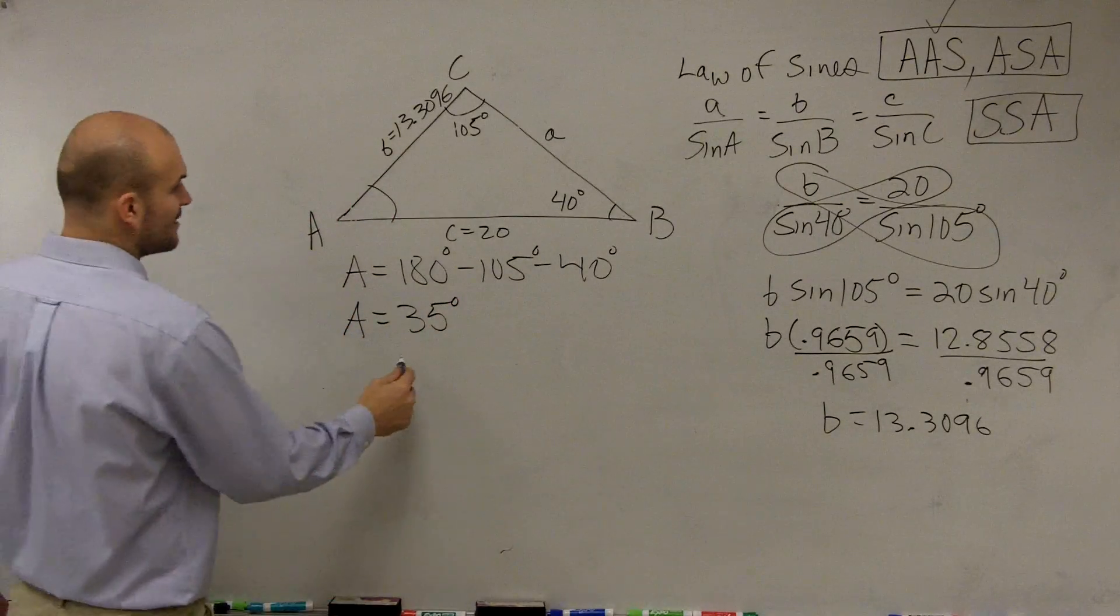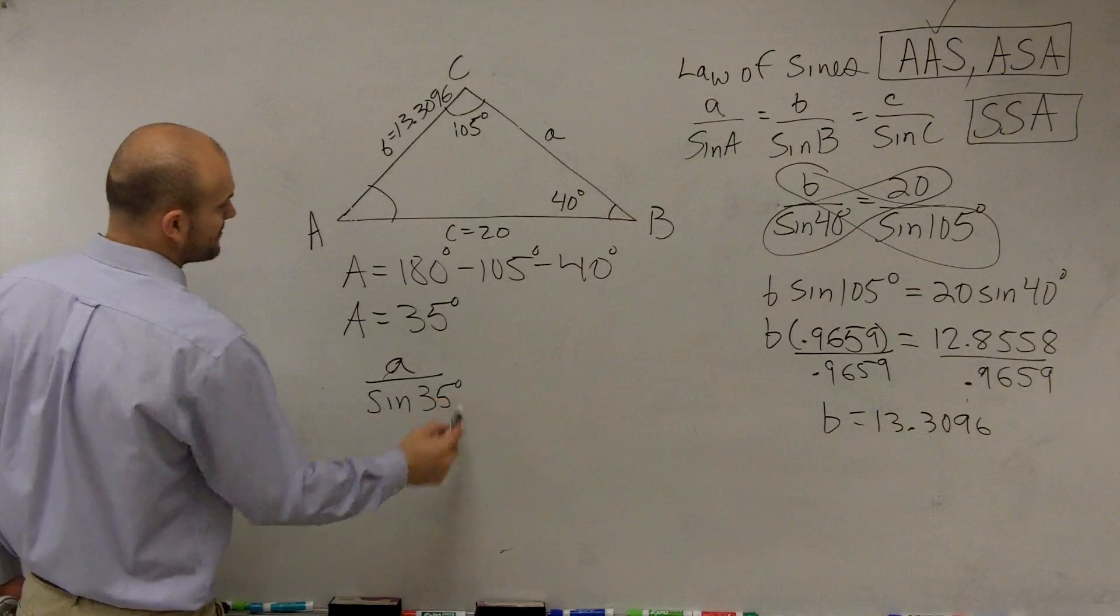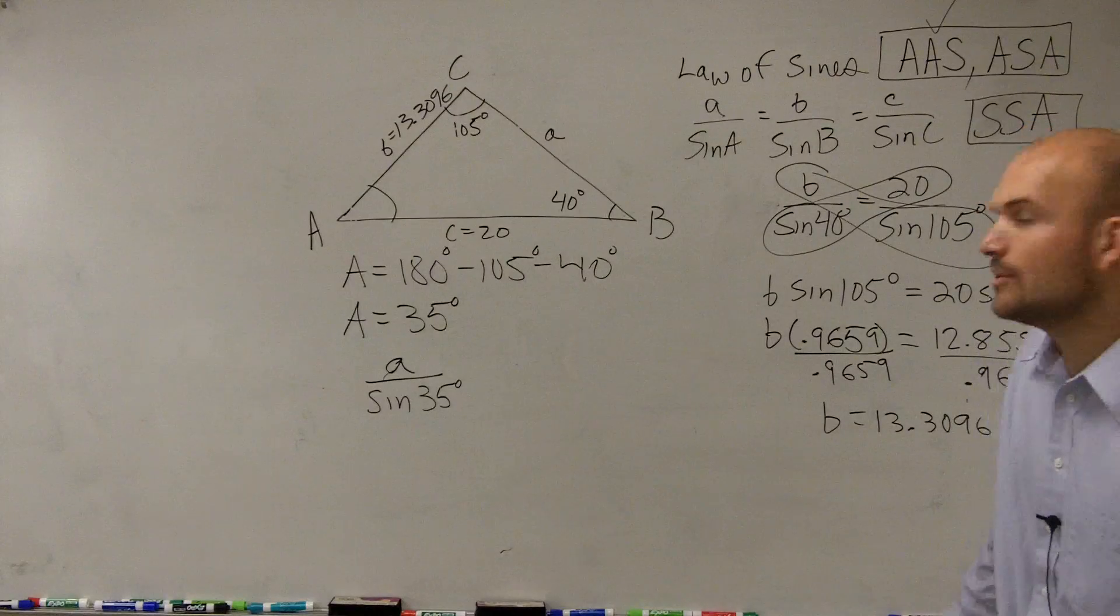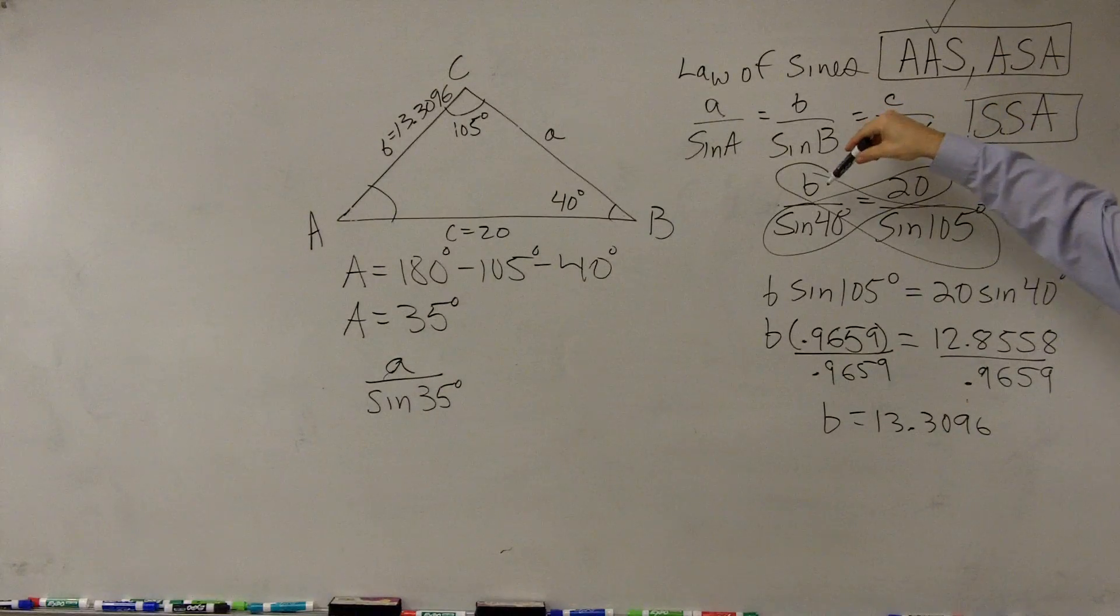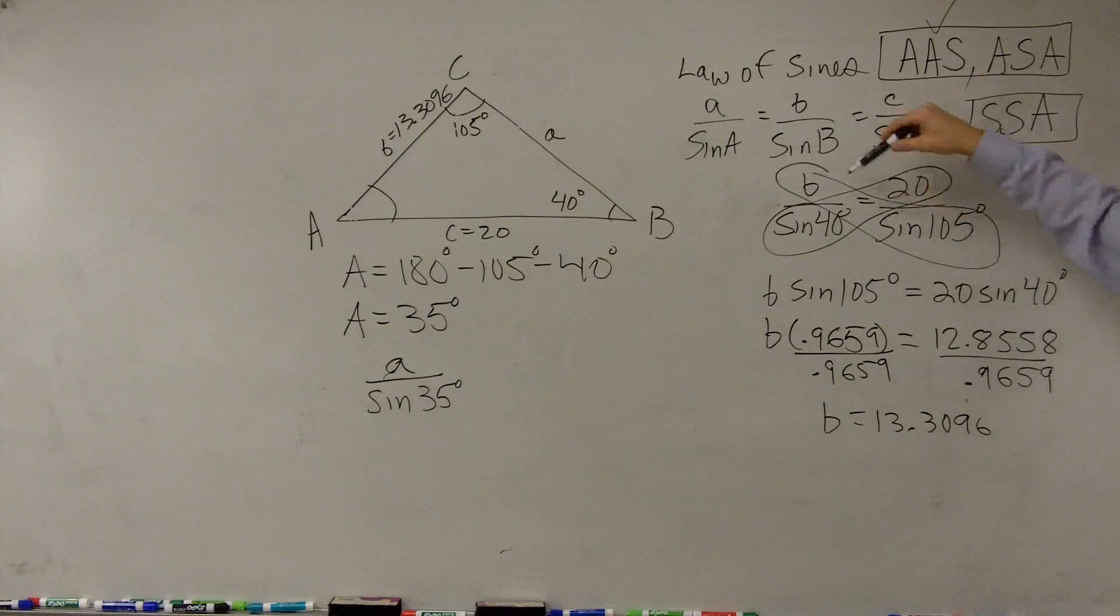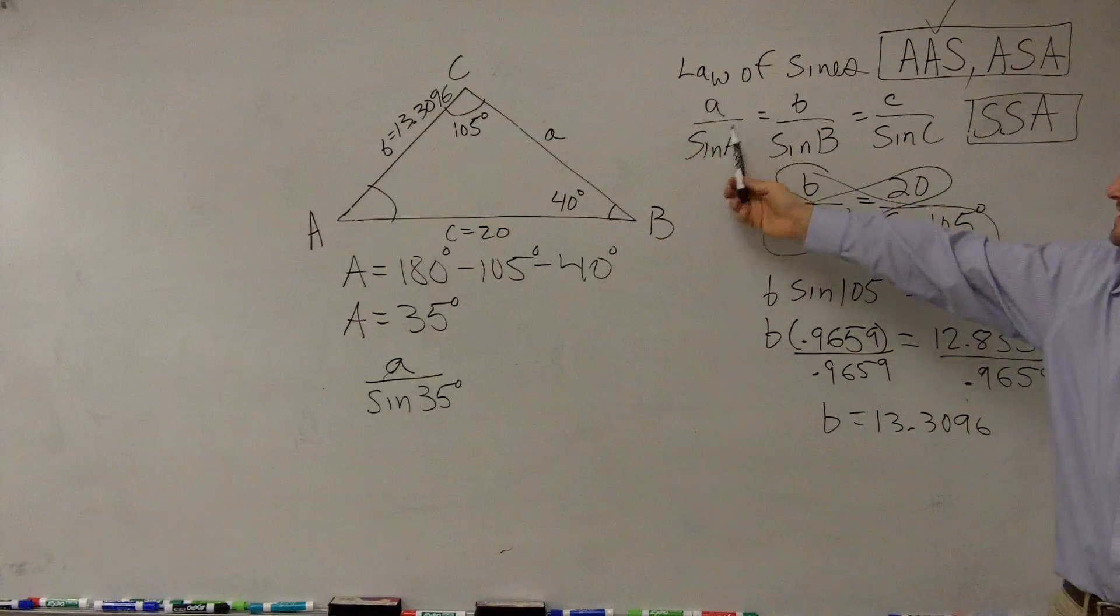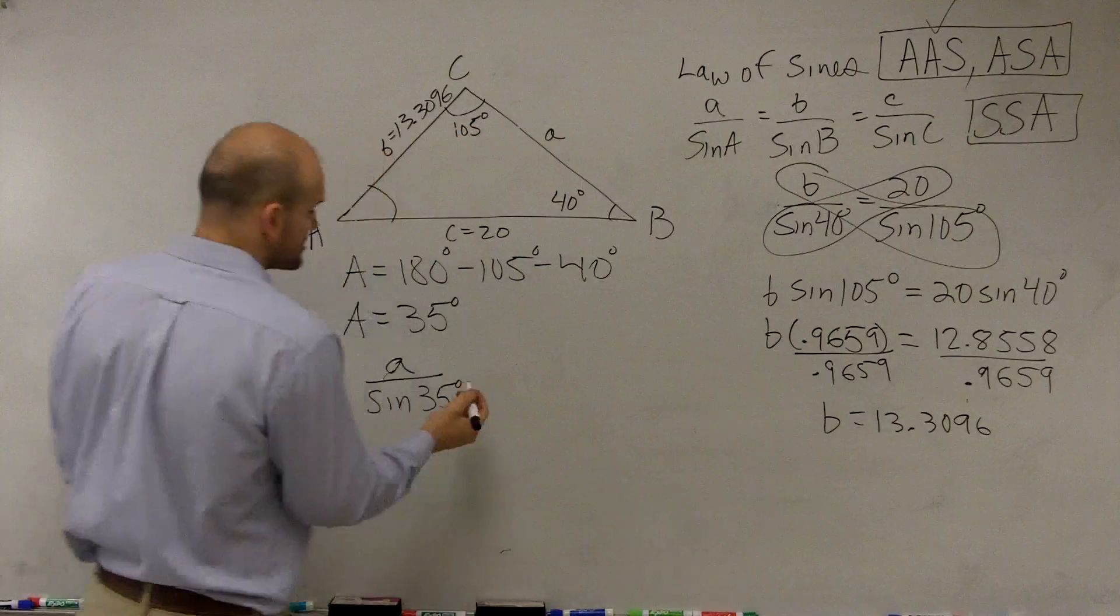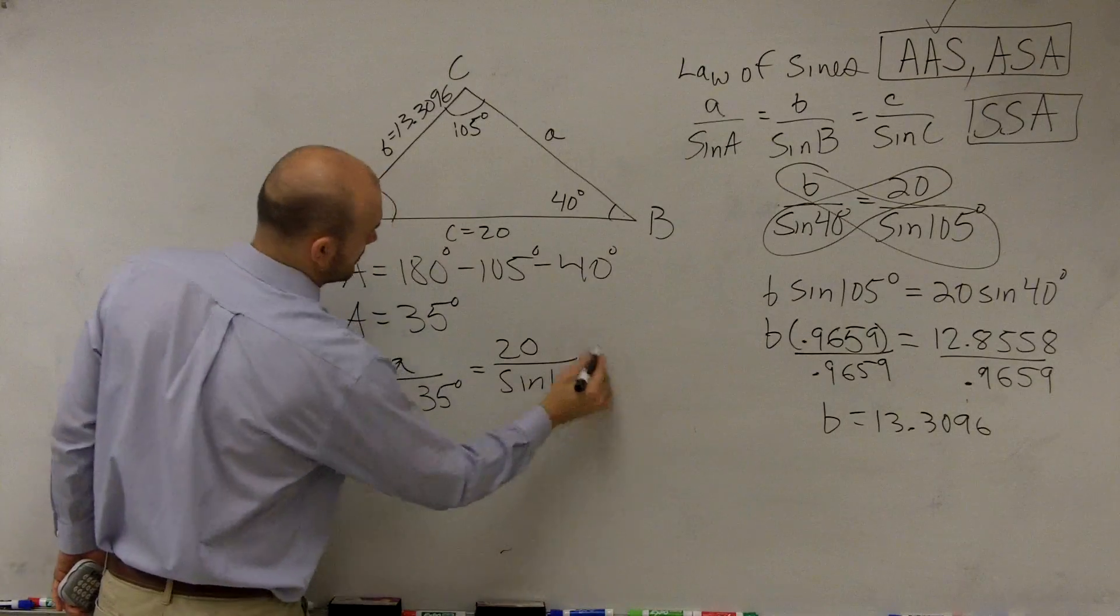Very good. So now I have a, which I still don't know, over the sine of 35 degrees. But what can I equal that to? Well, ladies and gentlemen, you could equal it to 20 over sine of 105 degrees. And now we know what B is, right? B is now 13.3096. So you could use either one of these ratios and set it equal to A. Because remember, all three of them, if this ratio is equal to this ratio, then this ratio is equal to this ratio, right? So it doesn't matter which one you set equal to each other. I think for simplicity's sake, I'm going to set it equal to C.